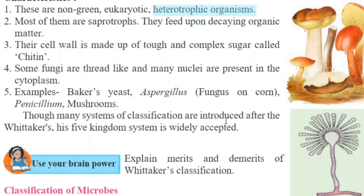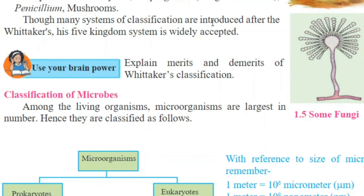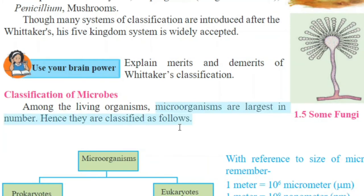Though many systems of classification have been introduced, one widely accepted system is the five-kingdom classification. Among the living organisms, microorganisms are the largest in number because their multiplication is very fast and requires very little time. If we think about the classification of microorganisms, there are two types: prokaryotes and eukaryotes. Among prokaryotes, bacteria is the only type. Among eukaryotes, there are protista, fungi, and algae.